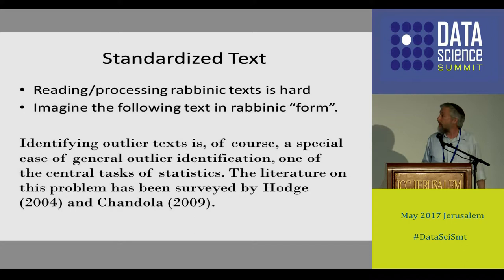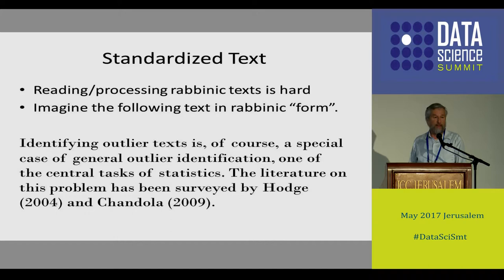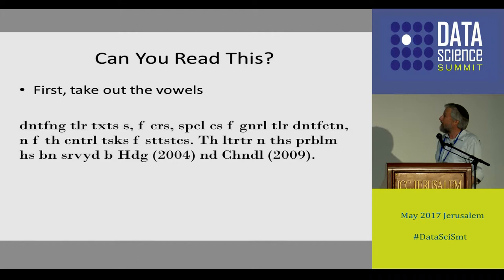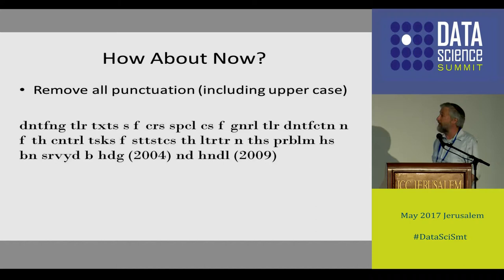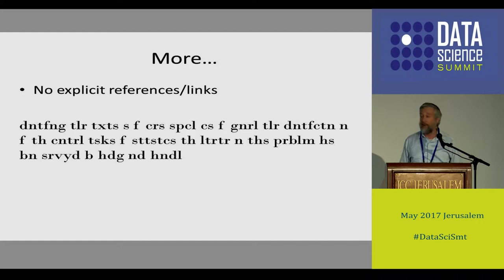First, there's the problem of standardized text. Processing a rabbinic text from 1,500 years ago, or even 100 years ago, is actually very hard. Take a random paragraph from a computer science paper — that's what a contemporary paragraph looks like. Now translate it into rabbinic form: first you take out the vowels, which is true for any unvocalized Hebrew text. Then remove all punctuation including uppercase. Then take out explicit references and links — you just have oblique references with no formal link. Throw in scribal errors, because manuscripts are copied over and over again, and then add ambiguous abbreviations that might have four or five different interpretations you have to resolve from context.